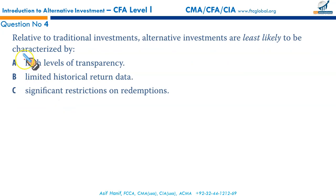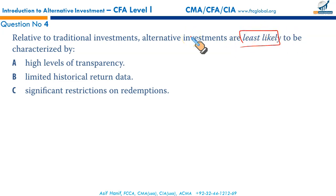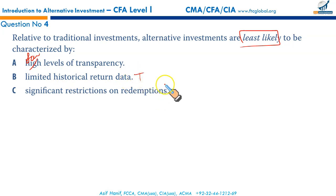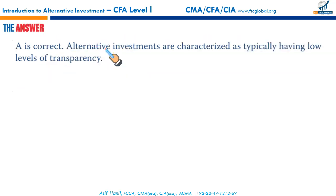Question number four. Relative to traditional investments, alternative investments are least likely — again, mind this word — least likely to be characterized by a high level of transparency. This is least likely because alternative investments typically involve a low level of transparency. Limited historical return — this is true. Significant restrictions on redemptions — you invest and it will be difficult to take your positions out — that is true. So B and C are true; A is least likely. That makes A the correct option.